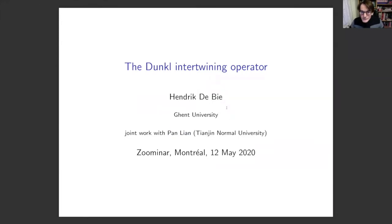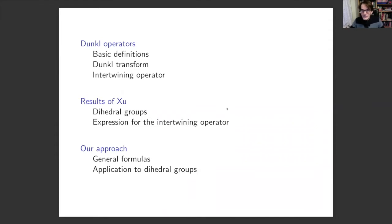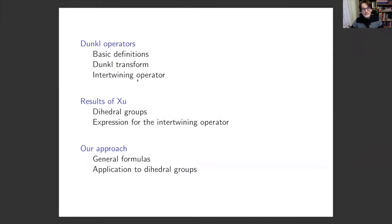The topic is the Dunkl intertwining operator. I'll start with some background for those not too familiar with that. I'll talk about Dunkl operators and what they are, and I'll talk about two important operators or transforms that exist in this context. One is the Dunkl transform, which generalizes the Fourier transform, and the other one is the intertwining operator. Then I'll move to some results of Yuan Xu from Oregon, whose work on this intertwining operator for dihedral groups inspired us to develop them further.